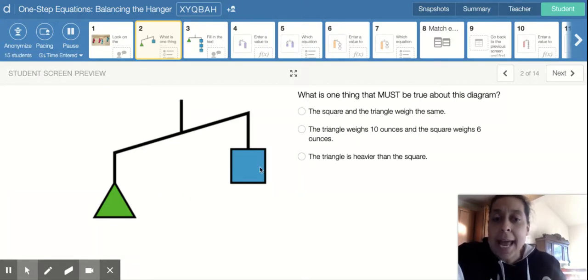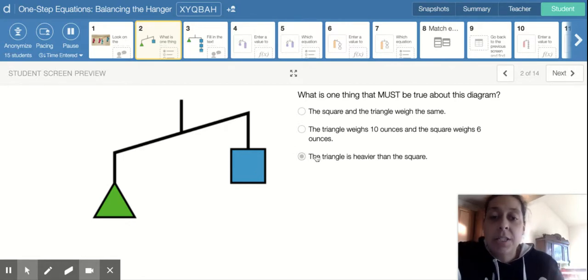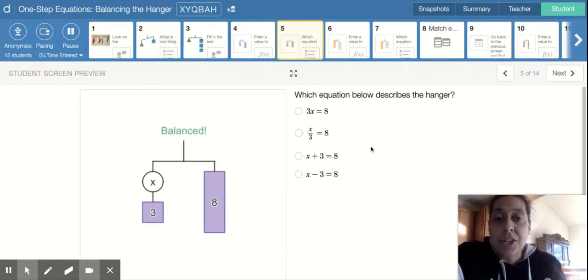So you really can't say, even though yes, I agree that the triangle does weigh more, you can't say that it's 10 ounces versus six ounces. So the correct answer is the triangle is heavier than the square. So that one is correct. Okay. The next one I wanted to jump to is question number five.